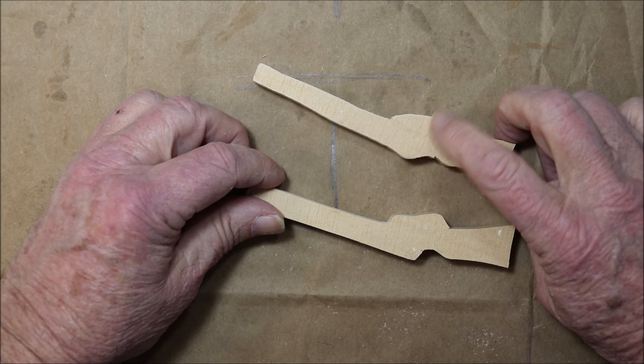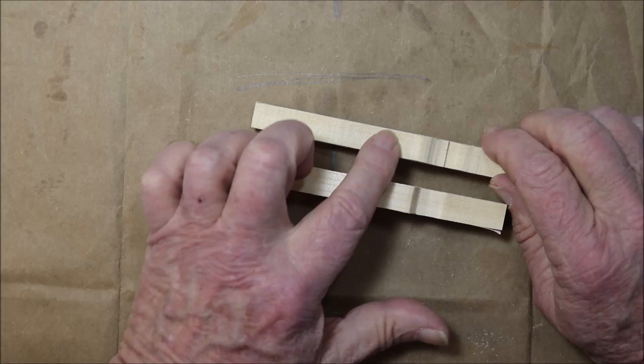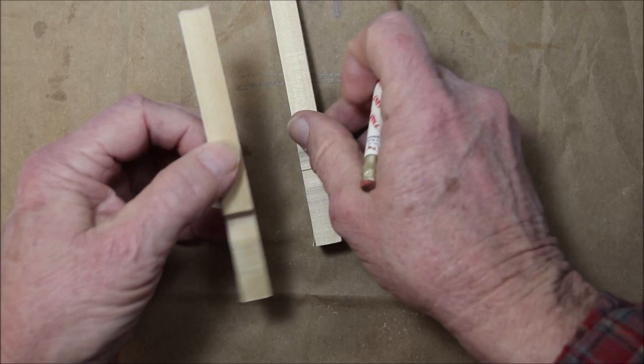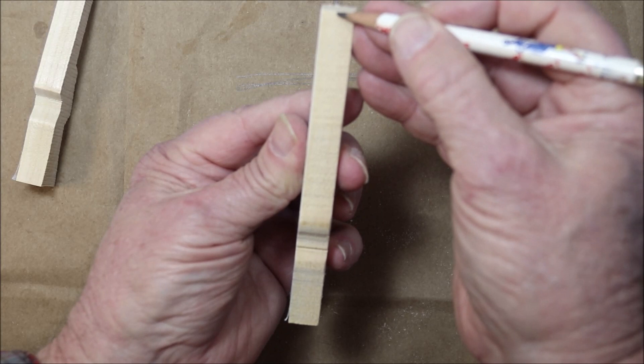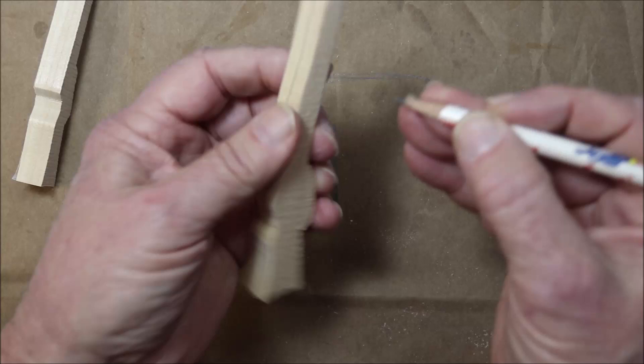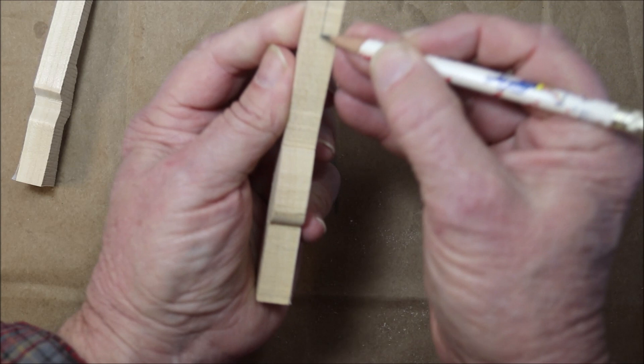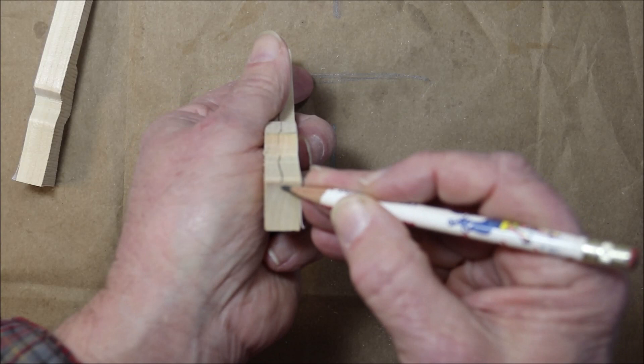See these are scroll. These are bandsaw marks right here. This has none on the top. This has them on the top also. So what we're going to do here is mark a center line around this thing. The first thing I'm going to try to do here is try to keep this rifle a little bit symmetrical.